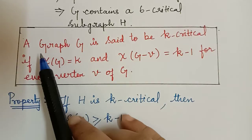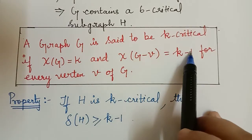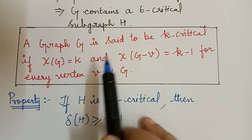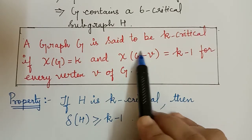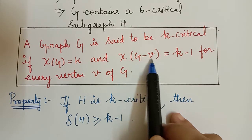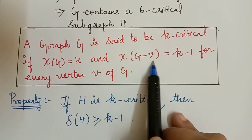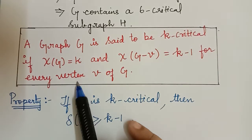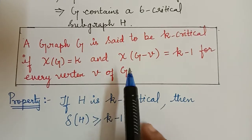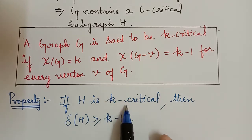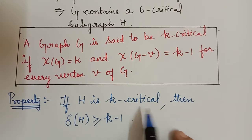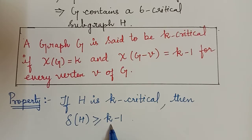The definition of a critical graph: a graph G is said to be k-critical if chi(G) = k and chi(G minus V) = k minus 1 for every vertex V of G. There is a property for the critical graph: if a graph H is k-critical, then the minimum degree of H is greater than or equal to k minus 1.